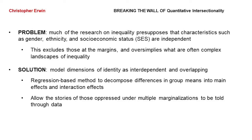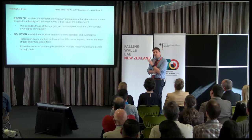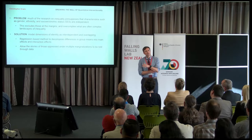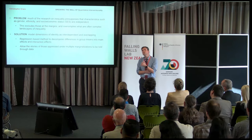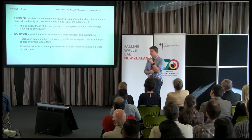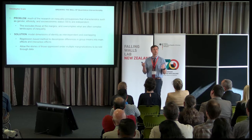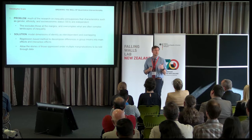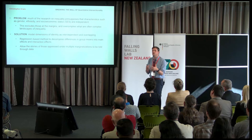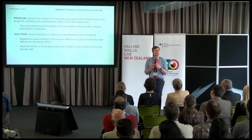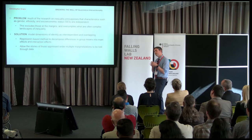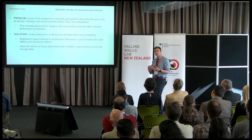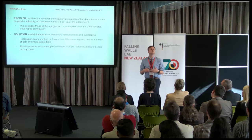I study inequality, and there's a problem with a lot of quantitative research on inequality in that it assumes — it presupposes — that these different identities we carry are independent. From a research perspective, that drastically oversimplifies the picture of inequality in society. And also what it does, it prevents the stories of those that experience multiple forms of marginalization from telling their stories through data.